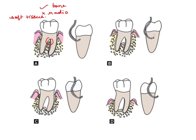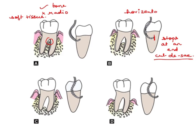Grade 2, as we can see here, the probe stops at one end — this is called a cul-de-sac lesion, meaning a tunnel with no exit. There is some bony wall present and mostly horizontal bone loss. The component is horizontal, and radiographic changes may or may not be seen.